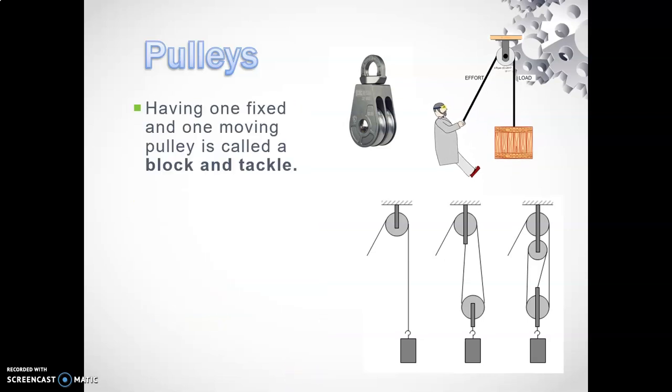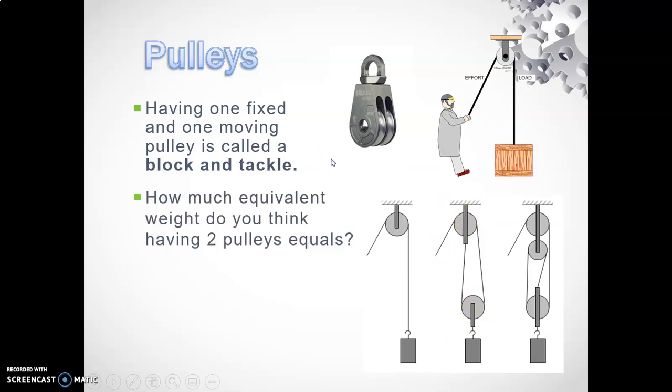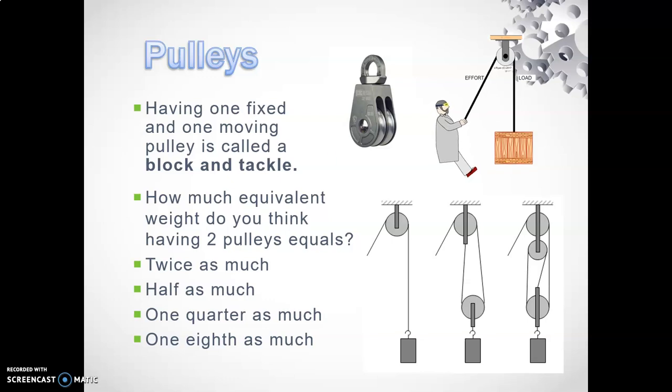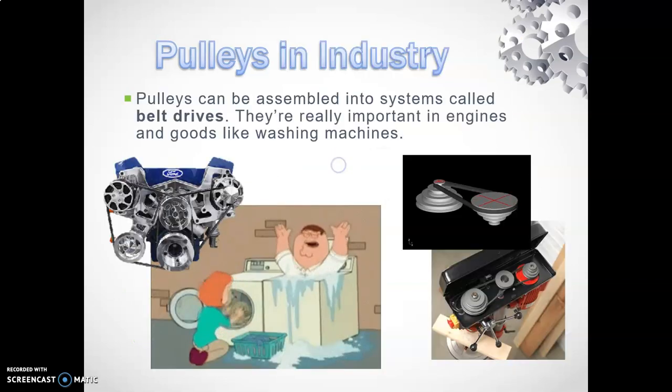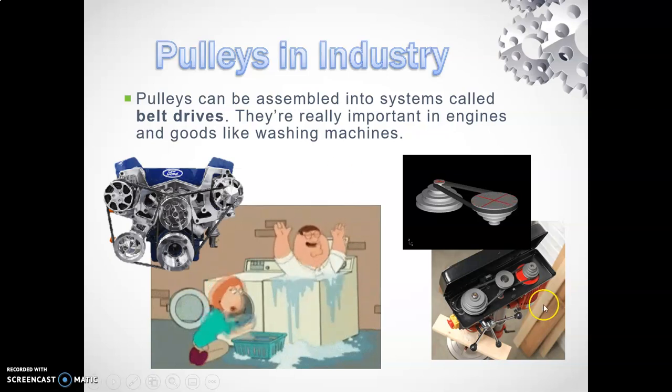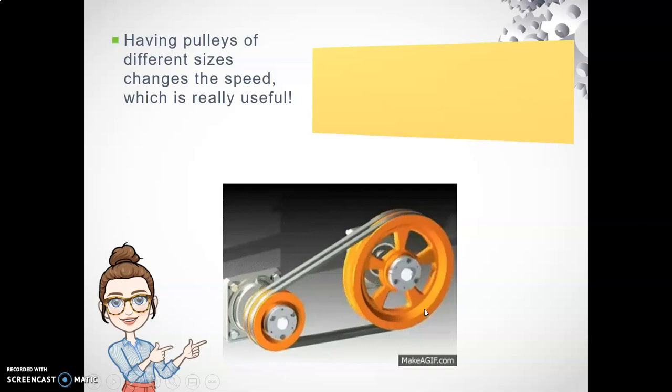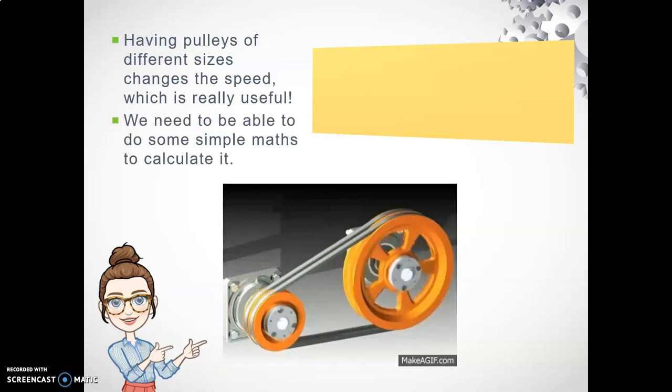When you have one fixed and one moving pulley, this is called a block and tackle. How much equivalent weight do you think having two pulleys would equal? The answer is half as much. If you had three pulleys working together, it would be a third as much, and so on. Pulleys can be assembled into a system called belt drive, which are really important not only in engines and goods like washing machines, but also our pillar drill that we discussed last week. Having pulleys of different sizes changes the speed, which is super useful.